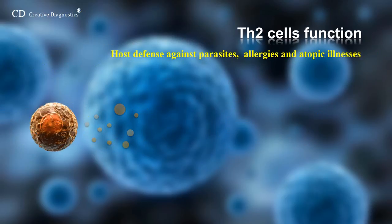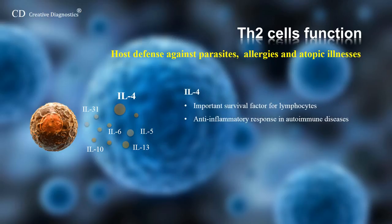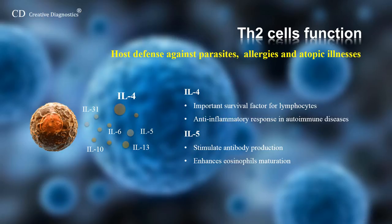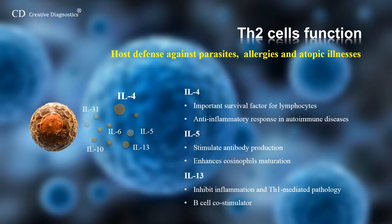TH2 cells are recognized for their role in host defense against multicellular parasites and their involvement in allergies and atopic illnesses. TH2 cells are best known for the production of interleukin-4, 5, 6, 10, 13 and 31. Interleukin-4 is a multifunctional, pleiotropic cytokine; it promotes the survival of lymphocytes, differentiation of dendritic cells and anti-inflammatory response in autoimmune diseases. Interleukin-5 and 13 are two other major cytokines produced by the TH2 subset. Interleukin-5 was initially described as T-cell replacing factor, which is secreted by TH2 cells to stimulate antibody production from activated B cells.